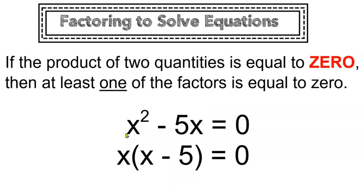Once I've factored out the GCF of x, I'm left with a product. These are two terms that when multiplied together equal 0.